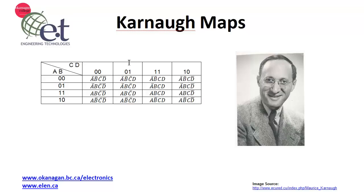Hi, this is David Williams. The topic of this video is Karno Maps. A Karno Map is a systematic method for simplifying Boolean algebra expressions, but it requires no actual Boolean algebra to do the simplification. It's a purely graphical method.